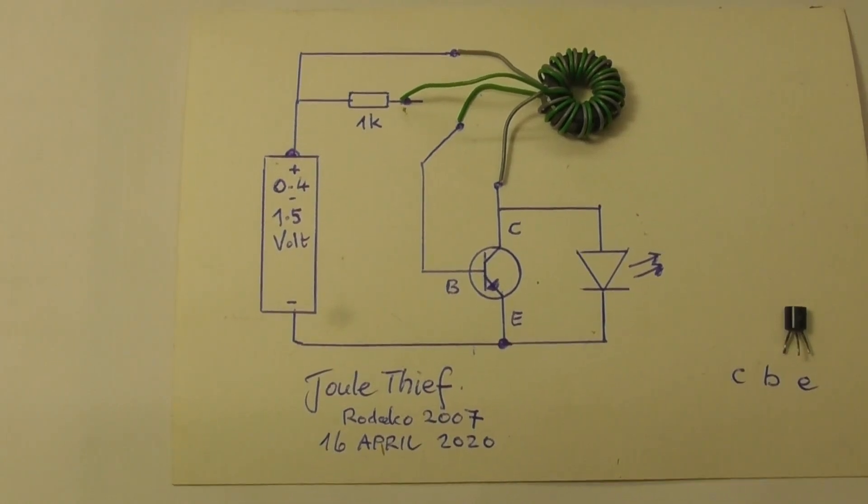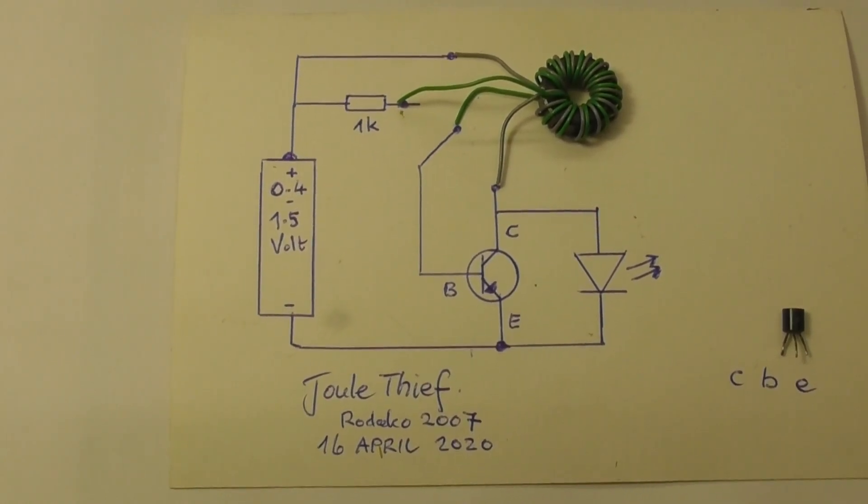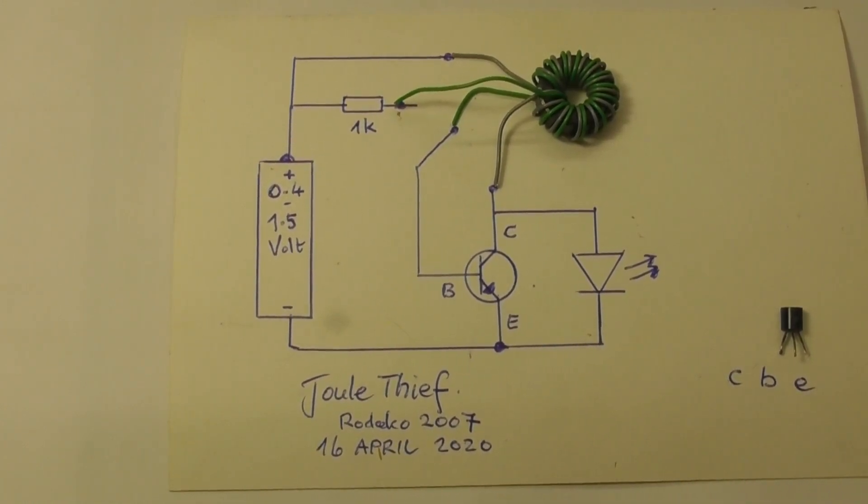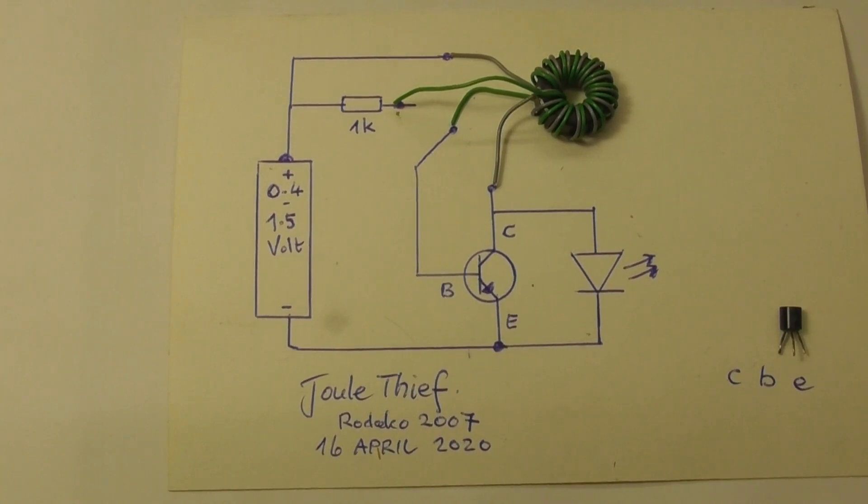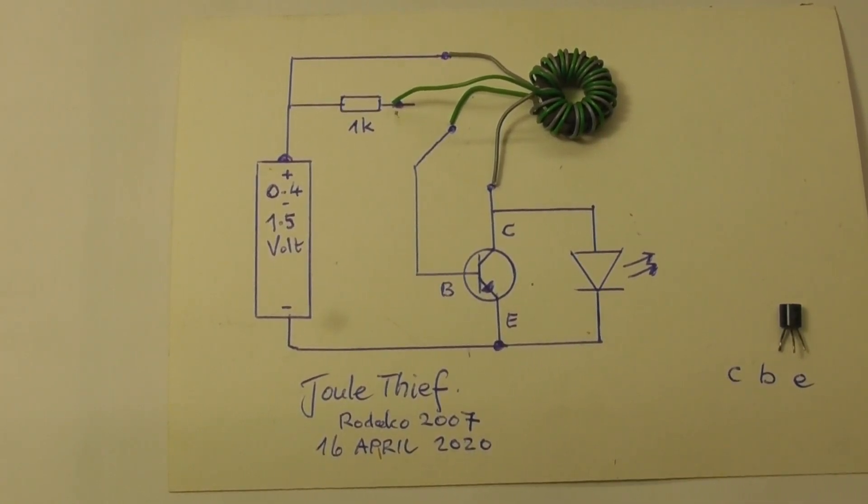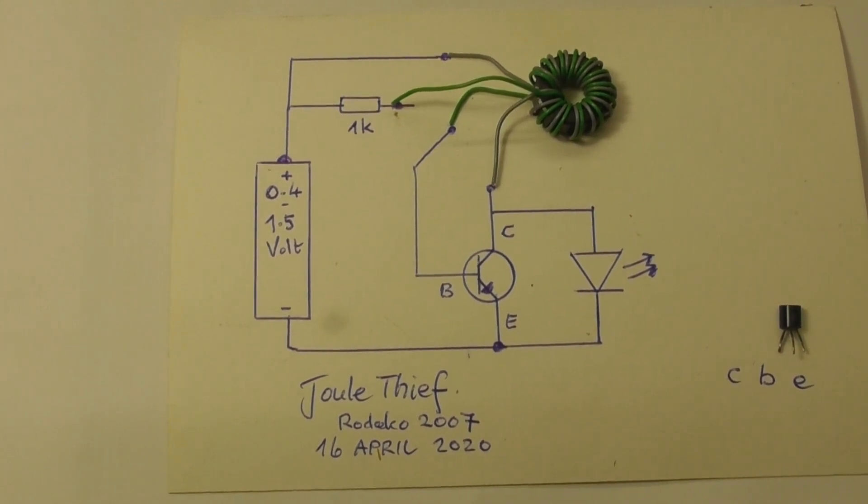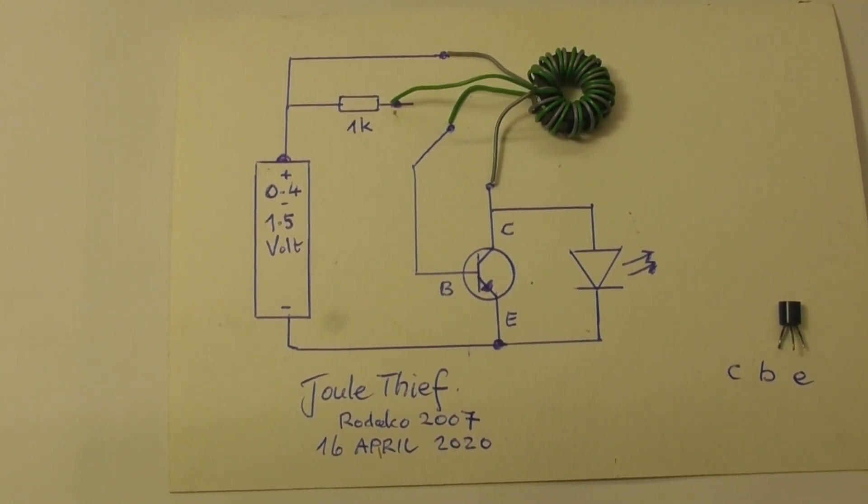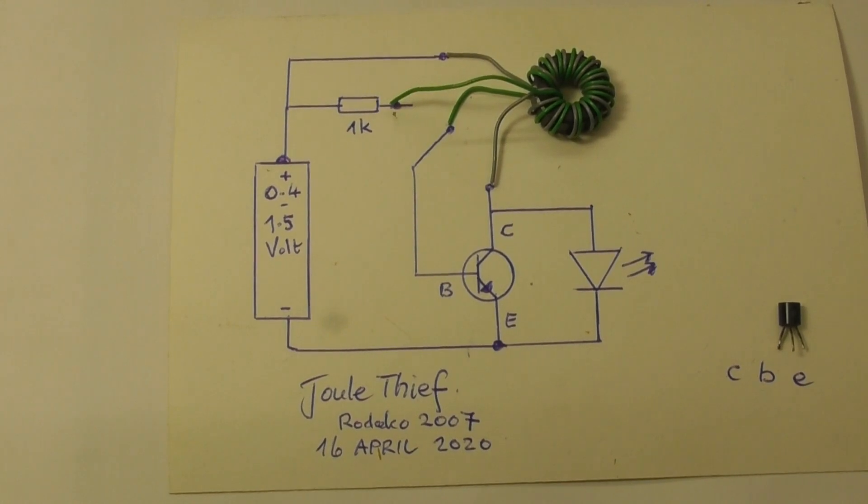Here we start off with the schematic of a Joule Thief. It's a very simple circuit to build and only needs very few components. You can use it when you have an old battery from a clock at 1.5 volts. Normally items stop working at say 1.2 volts, but you can drain the battery down to about 0.4 to 0.5 volts in a simple oscillator circuit.